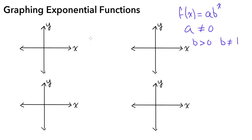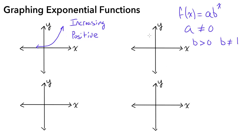We're going to cover four different types of graphs when graphing exponential functions. One kind is above the x-axis, meaning all y values are positive, and it moves upwards from left to right — this is an increasing positive exponential function. We can also have a positive exponential function that moves downward from left to right, which is a decreasing positive exponential function.